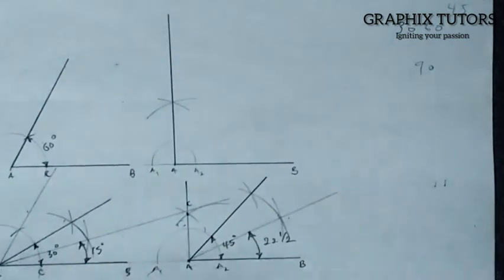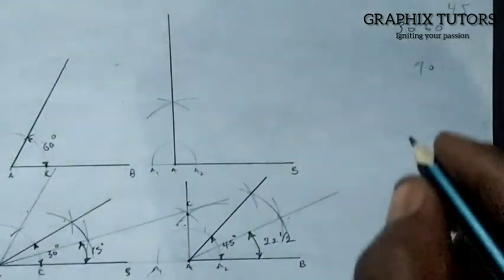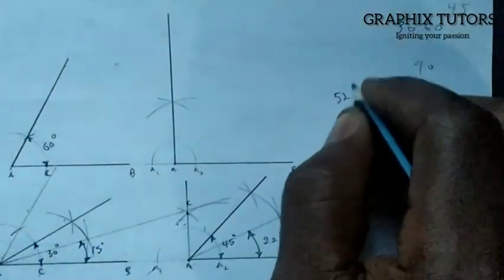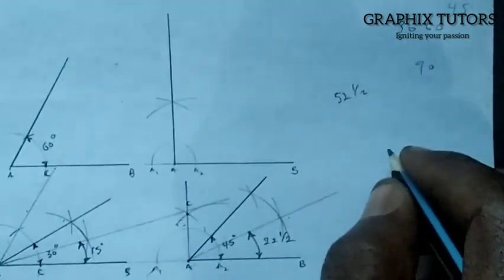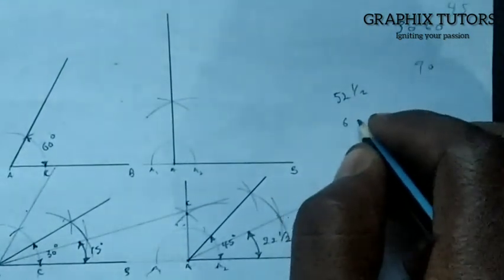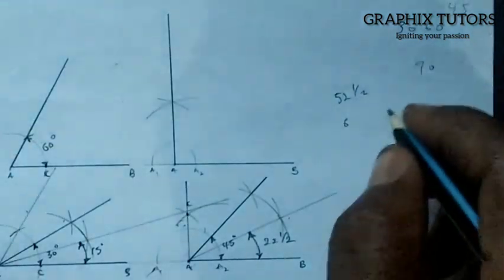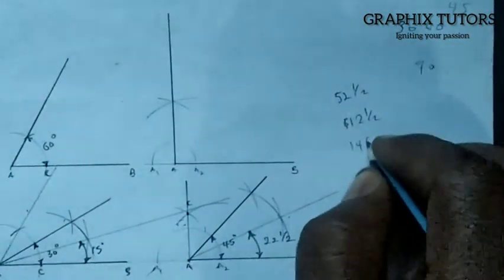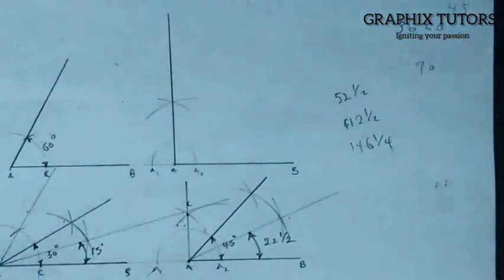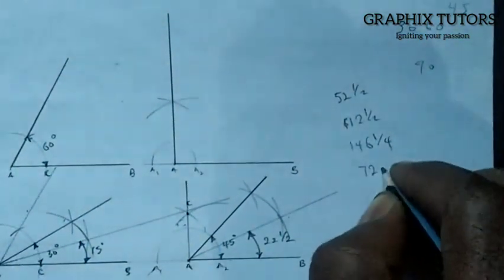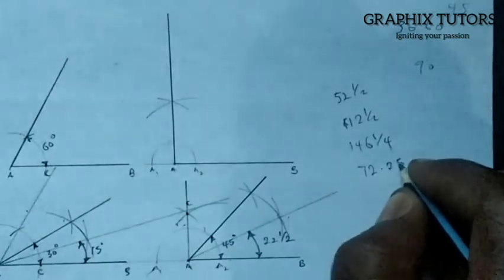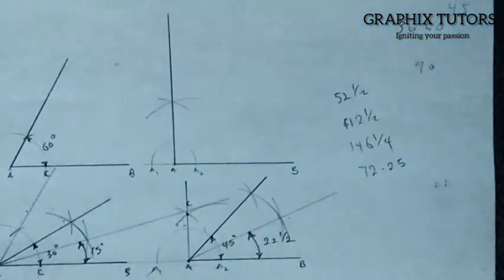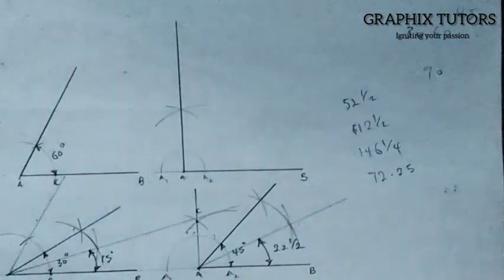In our next video, we are going to see how to construct angle 52.5 degrees, angle 112.5 degrees, angle 146.25 degrees, angle 72.25 degrees, and so on. Watch out for the next video. Thanks for watching — don't forget to click the subscribe button.